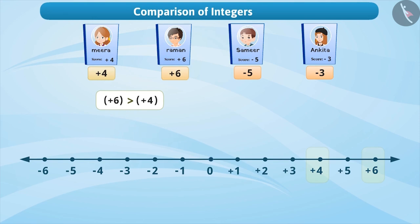Similarly, let's compare the scores of Samir and Ankita. Since the number minus 5 is to the left of minus 3, minus 5 is less than minus 3. In other words, minus 3 being on the right side of minus 5, minus 3 is greater than minus 5.